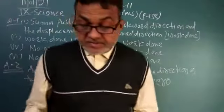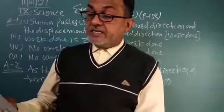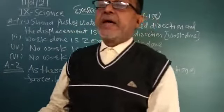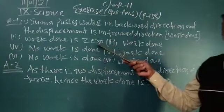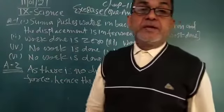So first work is done. Second, a donkey is carrying a load on the back. This means work done is zero because no displacement will take place.